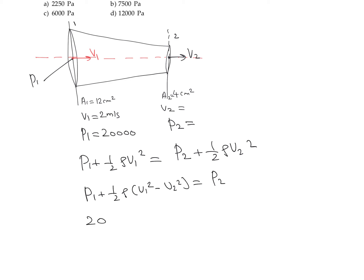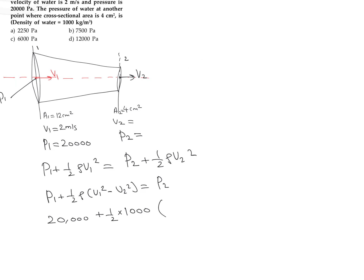The value of P1 is 20,000, and the density of water is 1000 kg/m³. We still need the value of V2 for the calculation. By applying the continuity equation, we can find the velocity at the second point. According to the continuity equation, A1 V1 equals A2 V2, so V2 equals A1 V1 divided by A2.